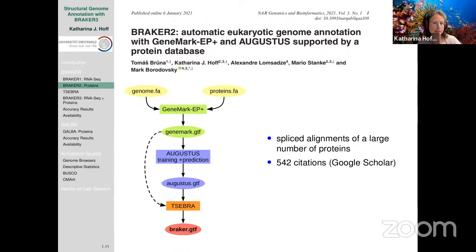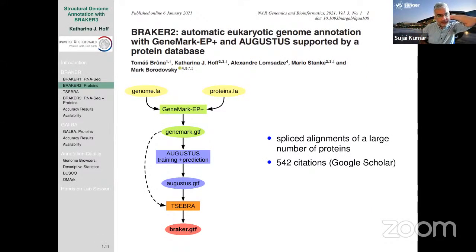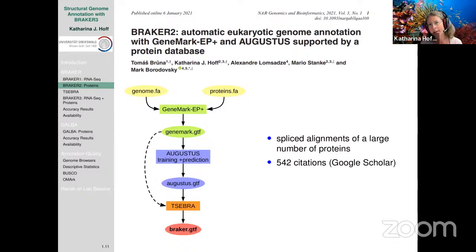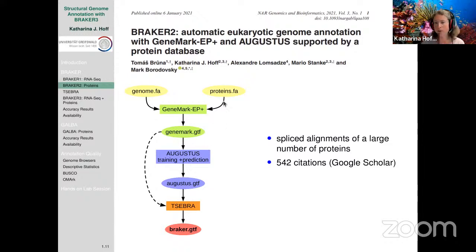BRAKER2 works well for algal genomes where RNA-seq data is unavailable but sufficient algal data exists in OrthoDB. GeneMark cannot handle large repeats well — that's why BRAKER1 and BRAKER2 struggle with genomes over ~600–800 MB. For selecting the best GeneMark predictions, we overlay protein-to-genome alignments with predictions and keep those with strong evidence, even if Augustus doesn't predict them.